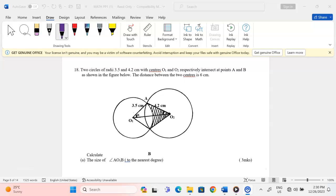Thank you for joining this lesson. I'm going to discuss intersecting circles number 18. The question says two circles of radii 3.5 and 4.2 centimeters with centers O1 and O2 respectively intersect at points A and B as shown in the figure below.